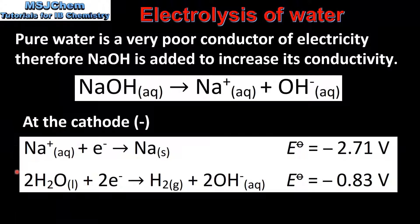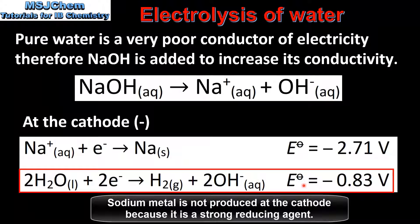Here are the two possible reactions that could take place at the cathode: the reduction of sodium ions to form sodium metal, and the reduction of water to form hydrogen gas. By looking at the electropotential values we can determine which reaction will take place. At the cathode, the reaction with a more positive electropotential will take place, therefore we'll have the reduction of water to form hydrogen gas.